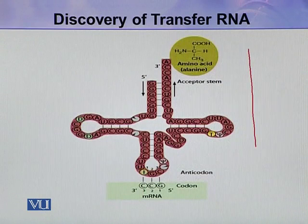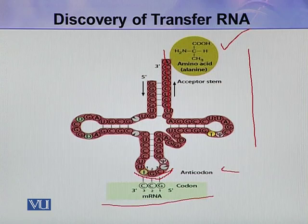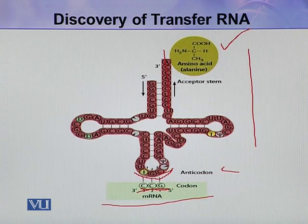Here you can see a tRNA molecule with one attached amino acid. This is the adapter stem where the amino acid is attached, and here is the sequence of three bases — the anti-codon. Similarly, this is the mRNA molecule, which acts as the template for protein synthesis. On this template RNA there is also a specific sequence of bases called the codon. In this way, the anti-codon present on the tRNA identifies a specific codon on the mRNA and binds to it.